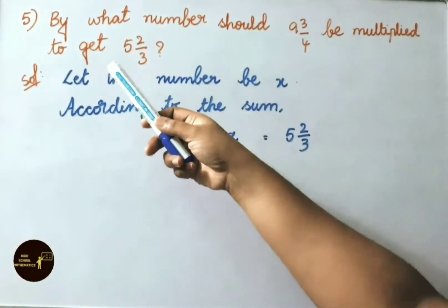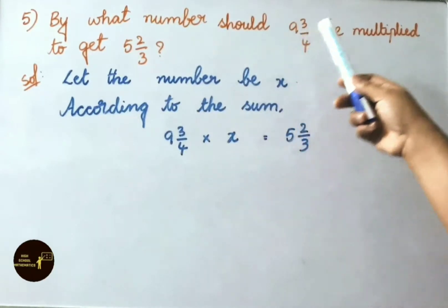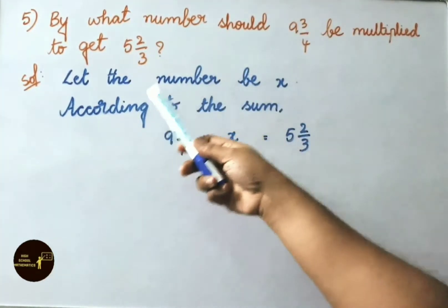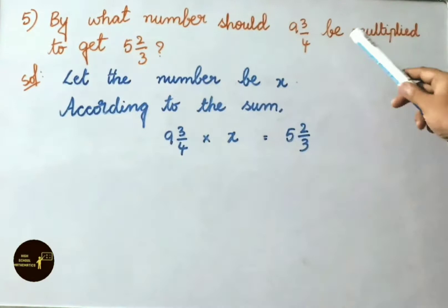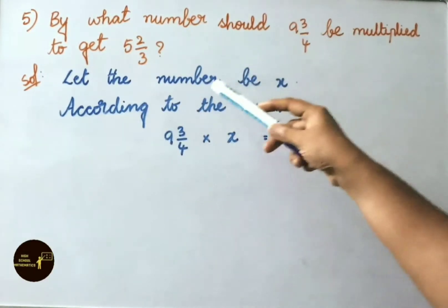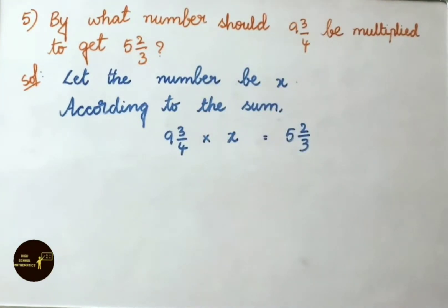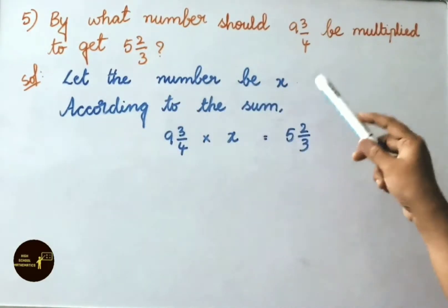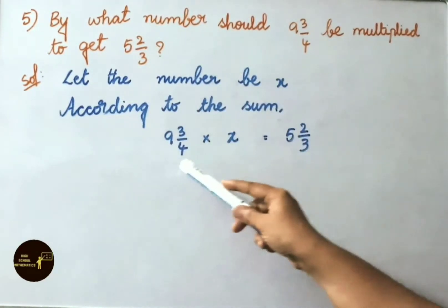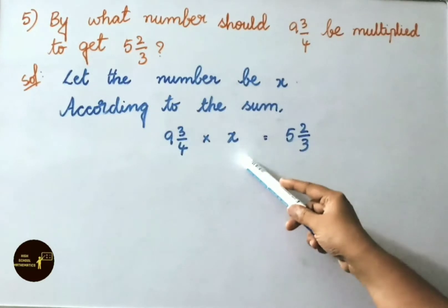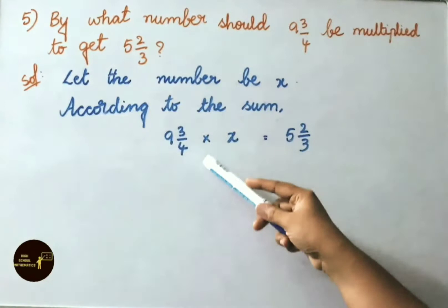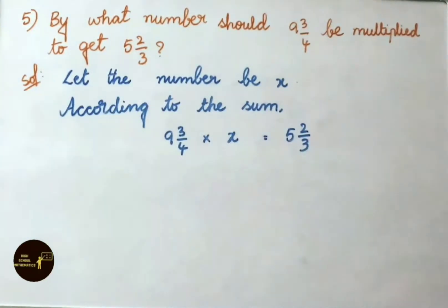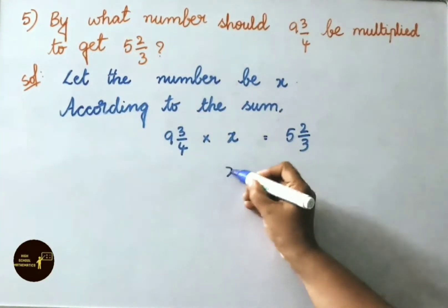See now question number 5. By what number should 9 3/4 be multiplied to get 5 2/3? Let us see the solution. We have to find a number that when multiplied by 9 3/4 gives the answer 5 2/3. So let the number be x. According to the sum, 9 3/4 into x equals 5 2/3.